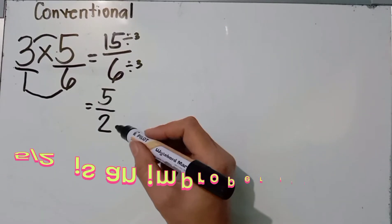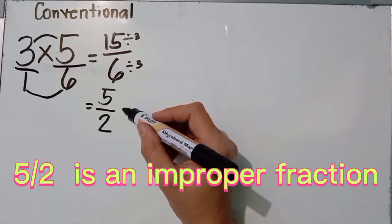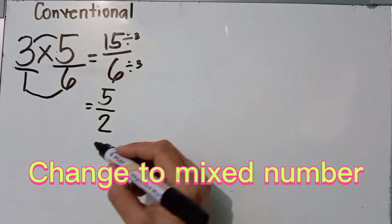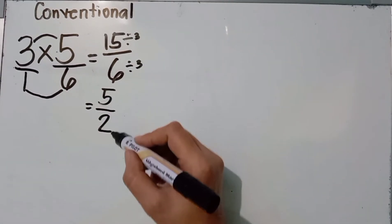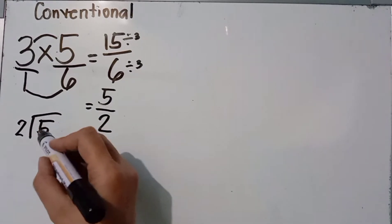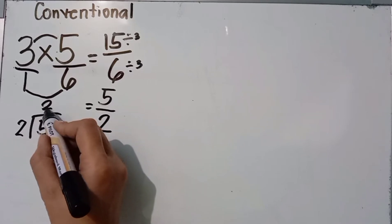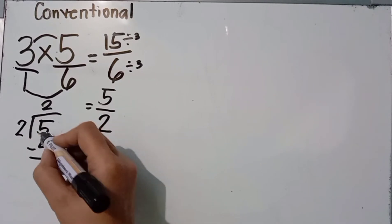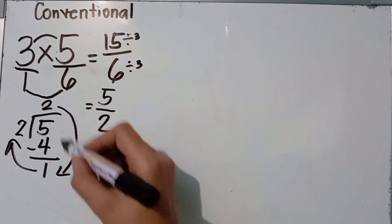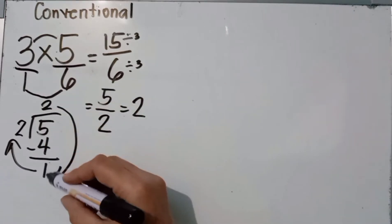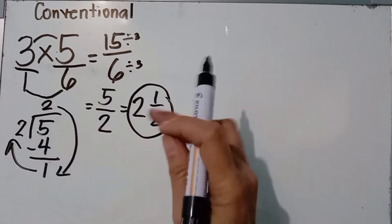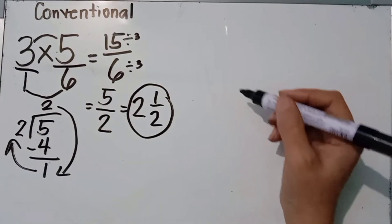Our answer is five over two. This is an improper fraction, so we need to convert it to a mixed number. Five divided by two equals two remainder one: two times two is four, and five minus four is one. So five over two becomes two and one half. Therefore, the product is two and one half using the conventional method.